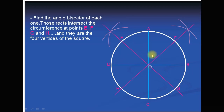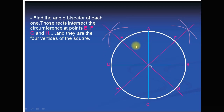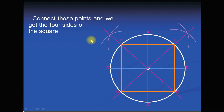After drawing these angle bisectors, you will see that these arcs intersect the circumference at eight points — E, F, G, and H. All these angle bisectors touch the circle at points E, F, G, and H, and these four points are actually the vertices of the square. Join point E to point H, point F to point G, point E to point F, and point H to point G. You will get a square. Connect those points and you get the four sides of the square — a polygon like a square.